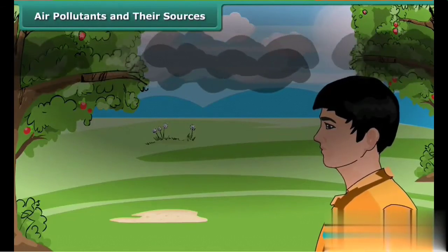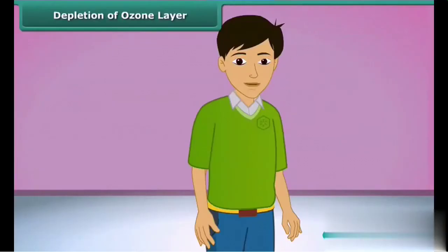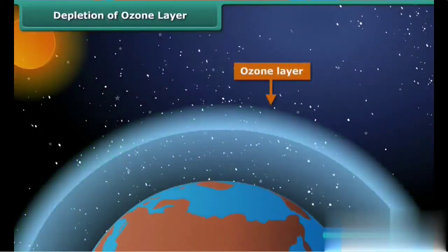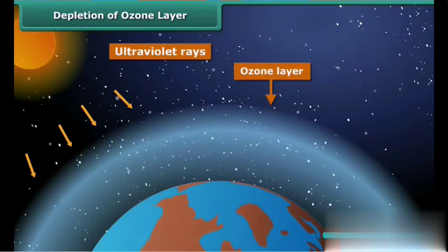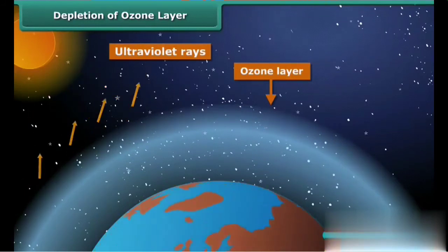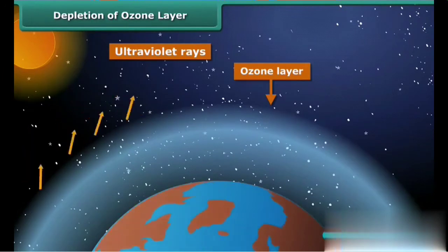Let us learn about the ozone layer. It is a layer of ozone gas in the upper atmosphere of Earth. It protects us from the harmful ultraviolet rays of the sun.